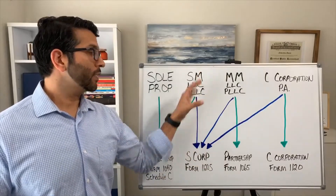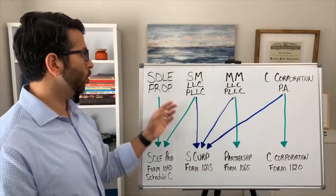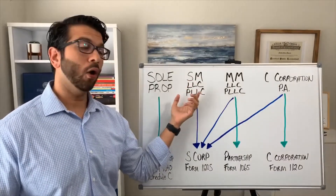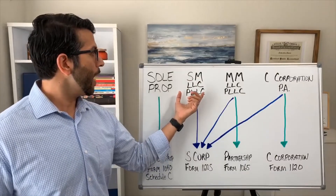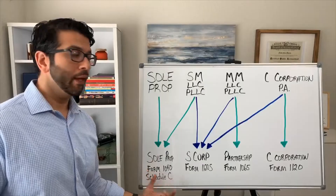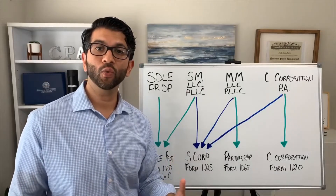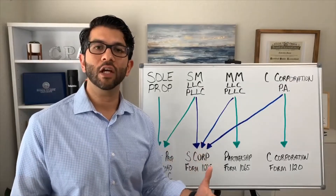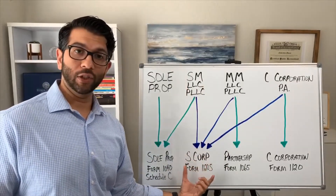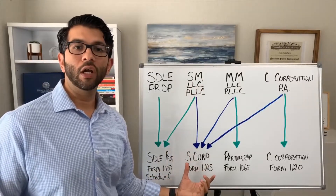A lot of entrepreneurs, especially if they're a one-person shop, form a single member LLC or PLLC and are treated as a sole proprietorship by default. Then once they cross that $40,000 in profit threshold where they can save thousands of dollars in self-employment tax, that's when they'll make the S-corp election and have their LLC treated as an S corporation for tax purposes.